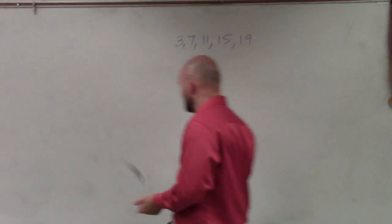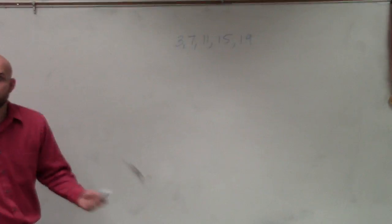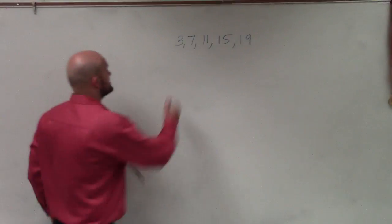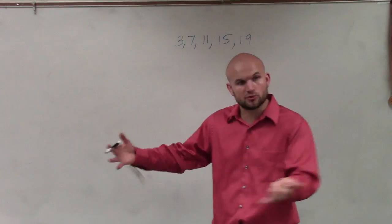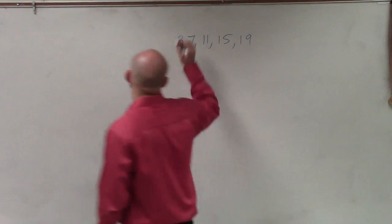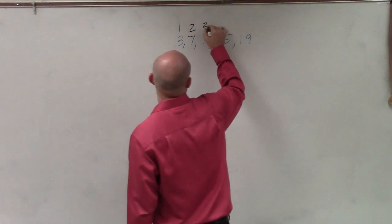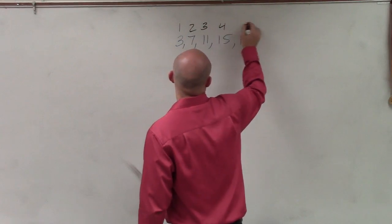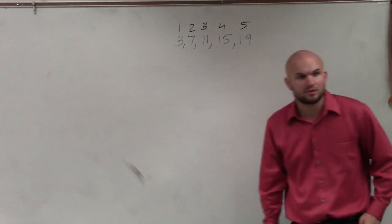So when we're looking at this, the main important thing is we're trying to determine this rule. So the first thing I always like to do in the rule is label what your a sub 1, 2, 3, and 4 would be. So I simply just write those numbers down.